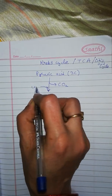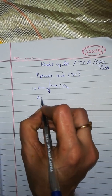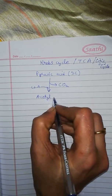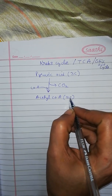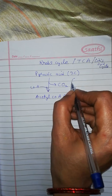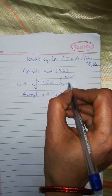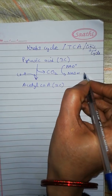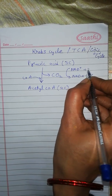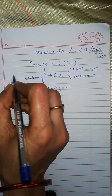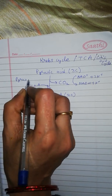A coenzyme A molecule is also involved and acetyl coenzyme A is formed. This acetyl coenzyme A is a two-carbon compound. Simultaneously, there occurs dehydrogenation — NAD is reduced to NADH. The enzyme involved is pyruvate decarboxylase.